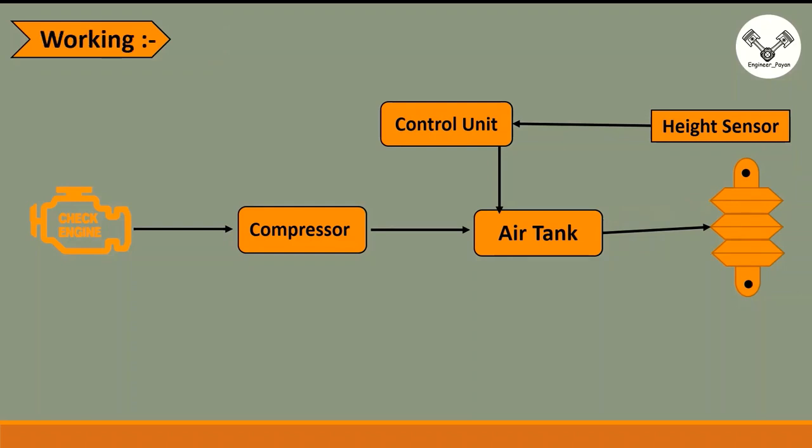Now we can see the working. The height sensor measures the height. The wheel changes the height and then the control unit controls the air from the air tank to the suspension.